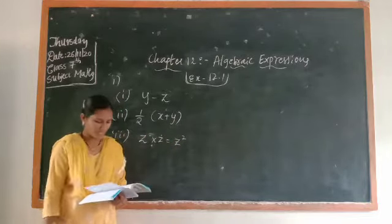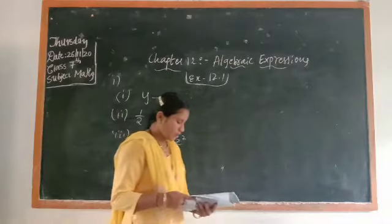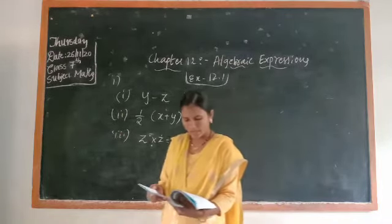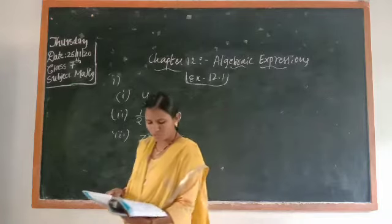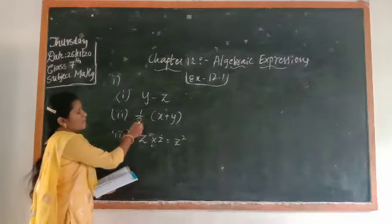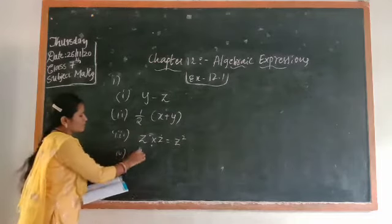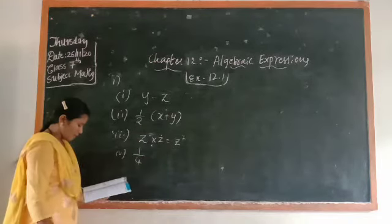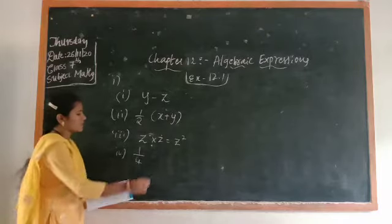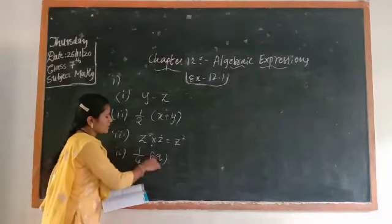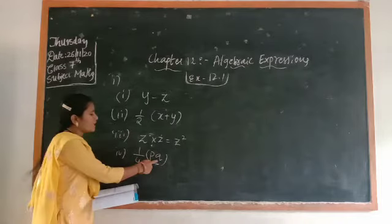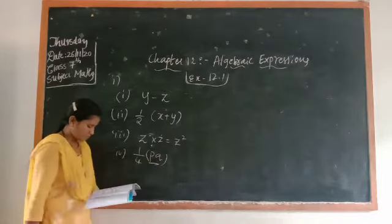Next question: one-fourth of the product of numbers p and q. One-fourth means one by four. Product means multiply, so product of p and q means p times q. The expression is (1/4) × p × q.